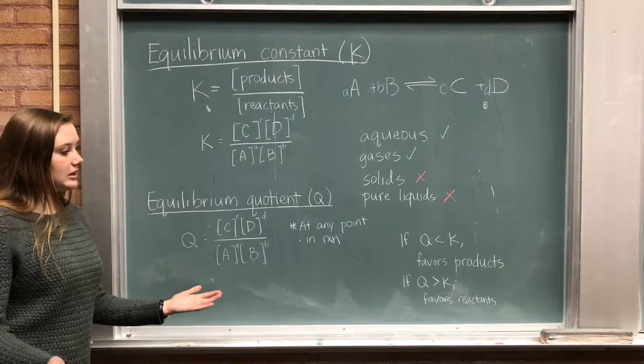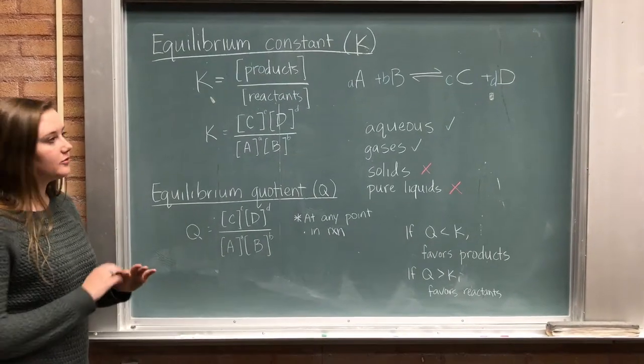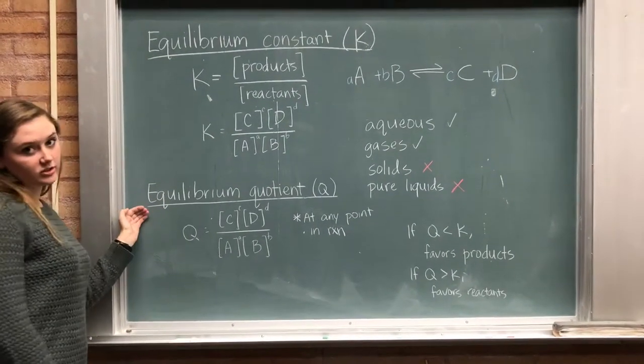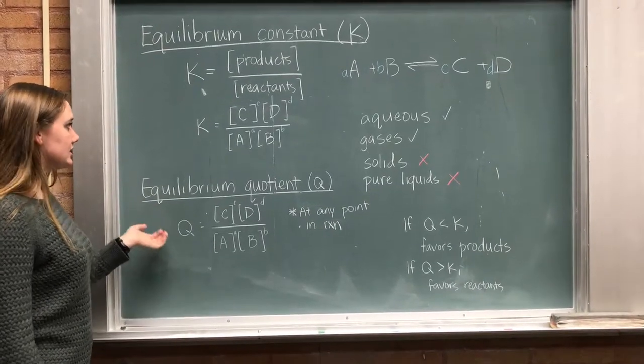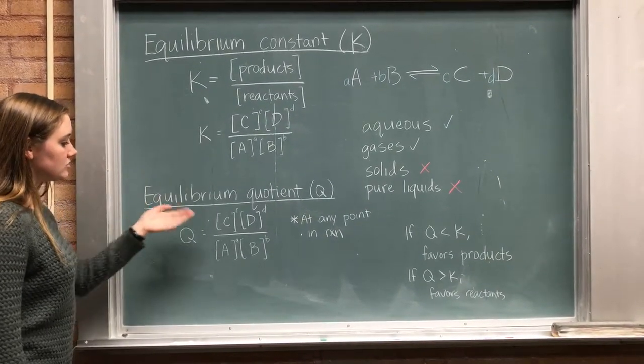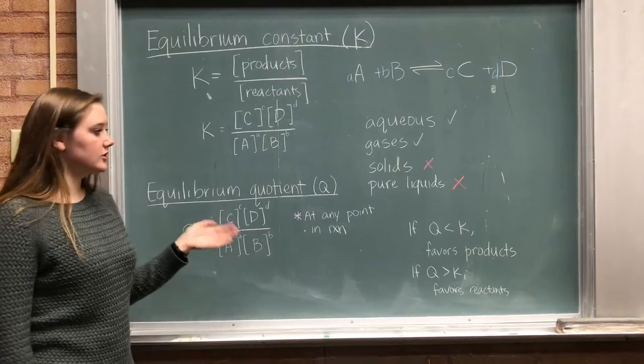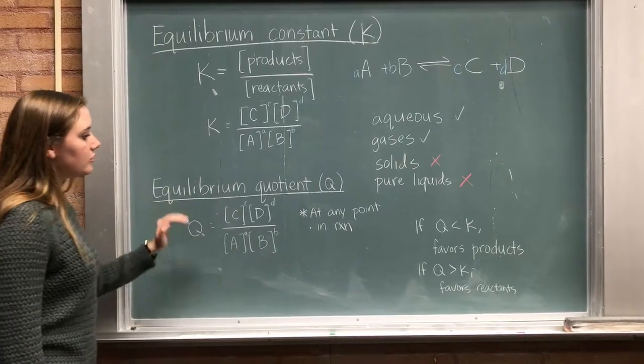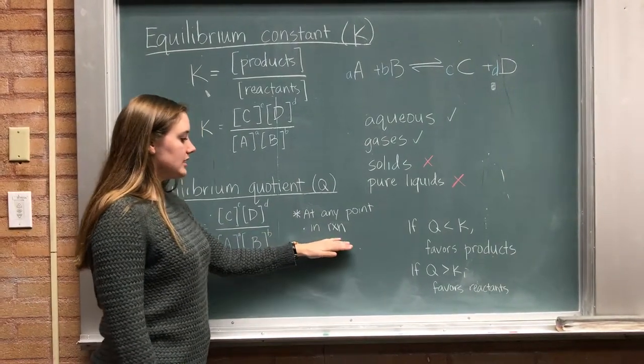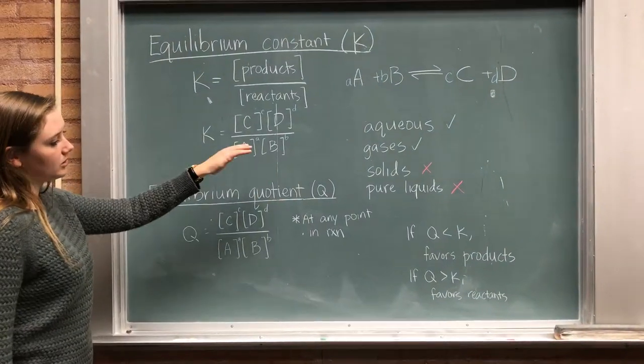If we're not at equilibrium, we have a different value for K. And that's called our equilibrium quotient. And that's Q. So we find Q the exact same way we find K, except we use the values that are not at equilibrium. So it's important to remember, Q is not at equilibrium as at any point in the reaction. And K is at equilibrium.